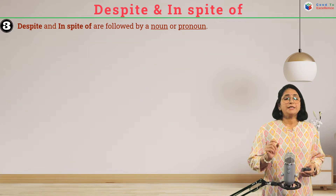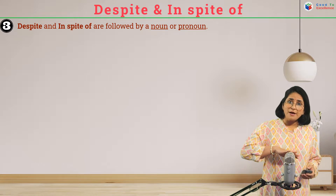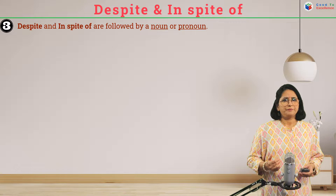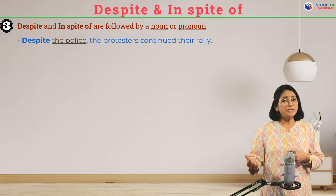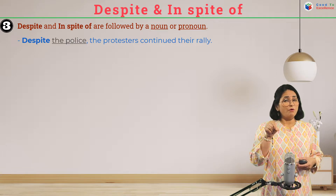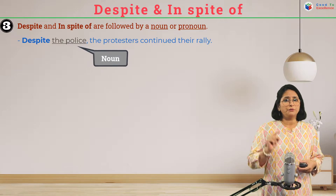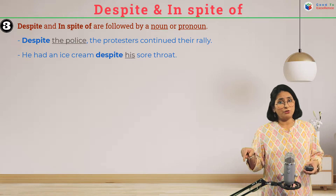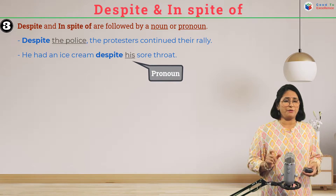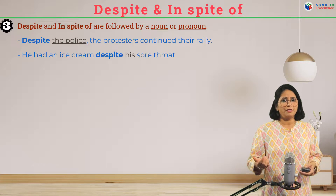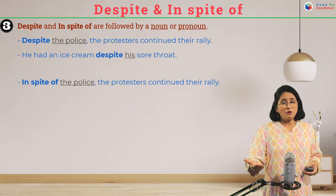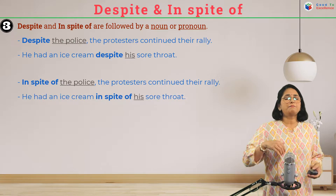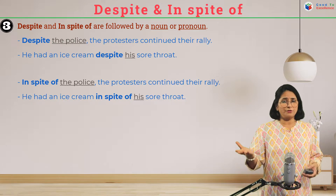The second thing to learn is that 'despite' and 'in spite of' are followed by a noun or pronoun. For example: 'Despite the police' — 'the police' is a noun. 'He had an ice cream despite his sore throat' — 'his' is a pronoun. The same applies to 'in spite of': 'In spite of the police' — noun; 'in spite of his sore throat' — pronoun.